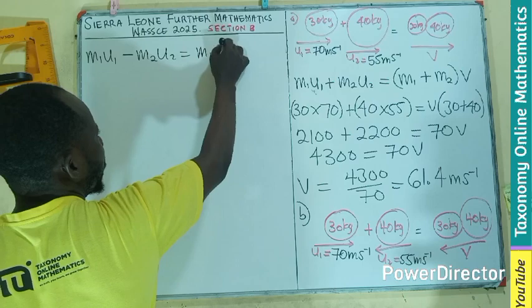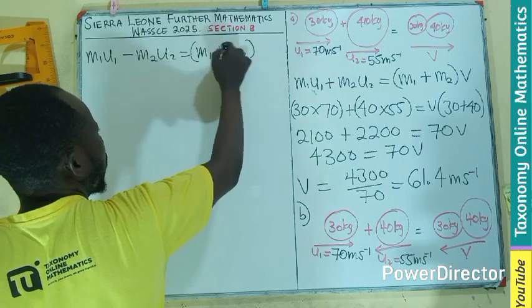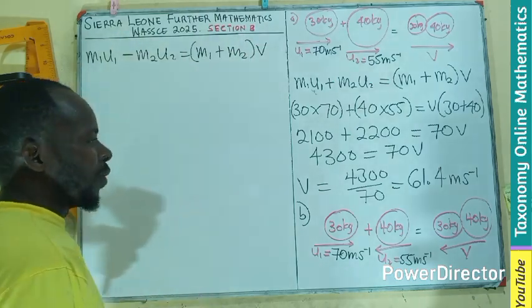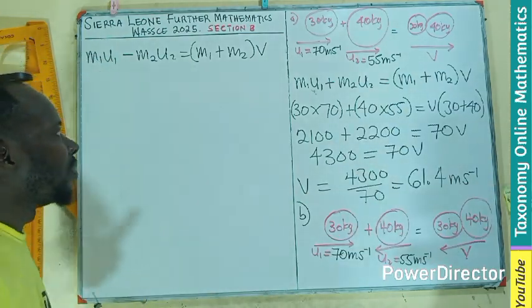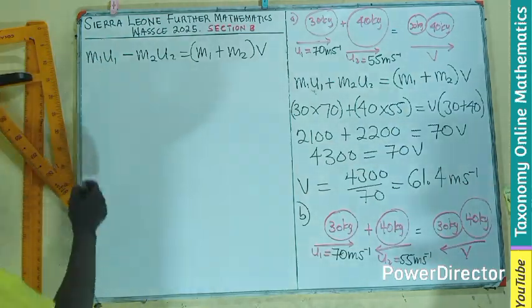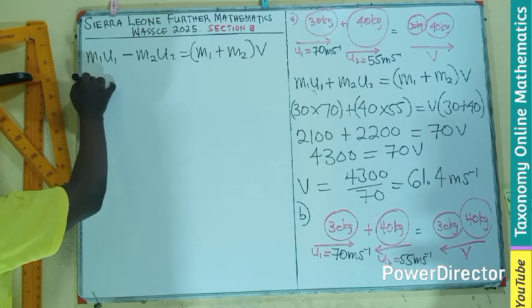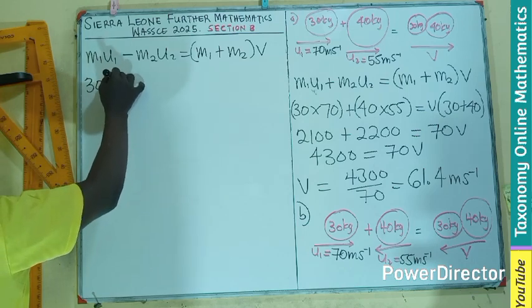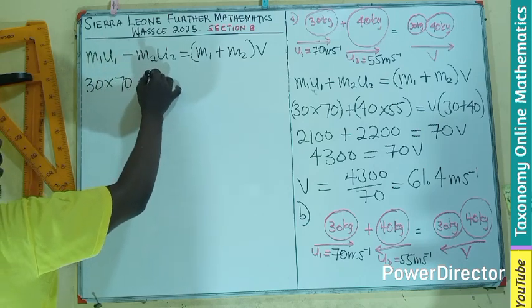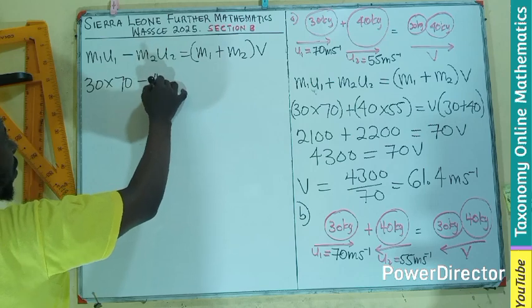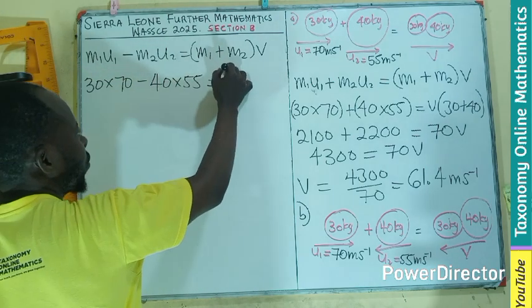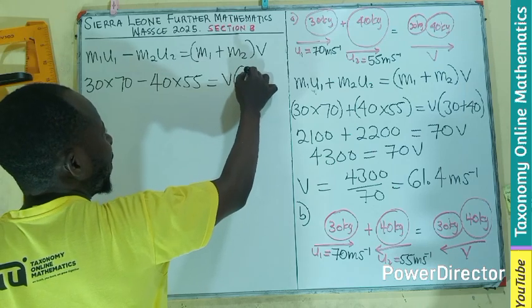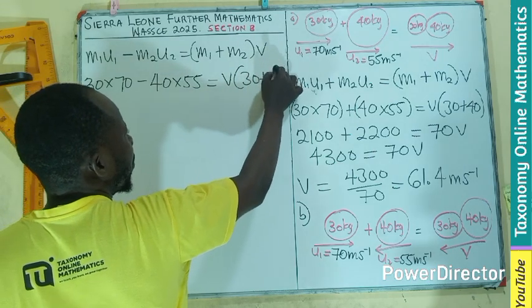So M1 plus M2 times V. Don't forget, they are going to move in the same direction for after collision. So they still have addition of their momentum out there. So by substitution, I still have 30 multiplying 70, then minus 40 multiplying 55 equals to V multiplying 30 plus 40.